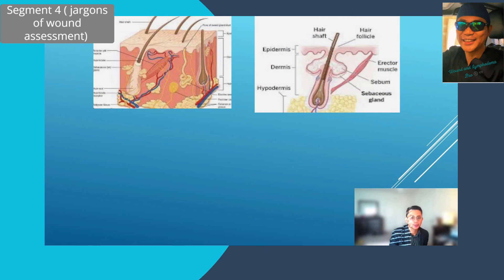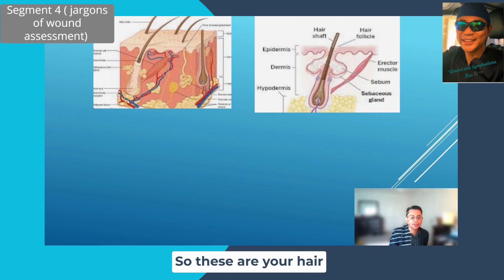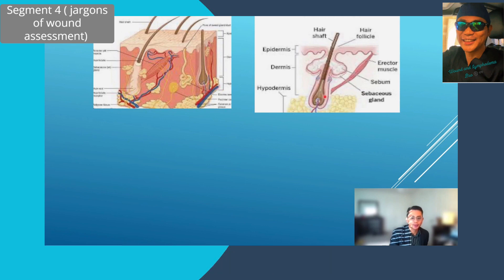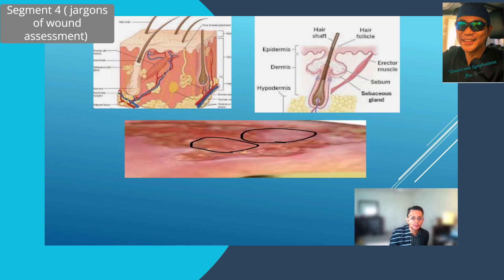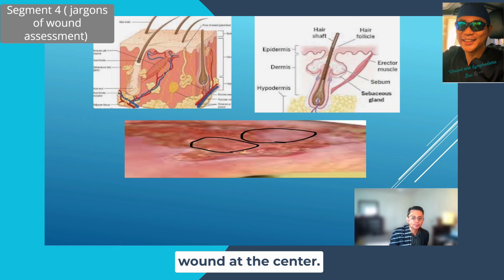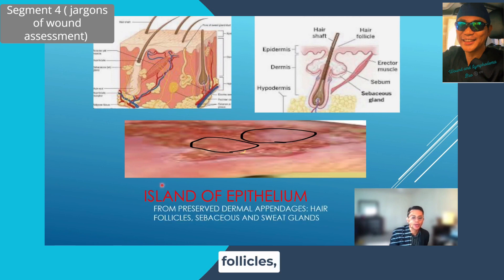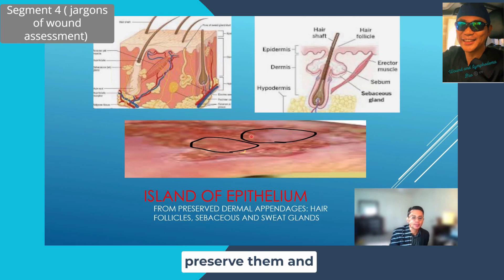This image shows the dermal appendages discussed earlier — hair follicles and sebaceous glands — all lined with keratinocytes, the cells that form epithelial tissue. When these structures are preserved within a wound, they will migrate to the surface of the wound at the center, proliferate, and help resurface the wound. These are called islands of epithelium, coming from preserved dermal appendages such as hair follicles and sebaceous glands. Always remember to not harm this tissue when you see it — preserve and protect them.